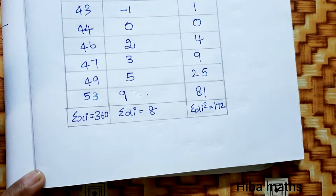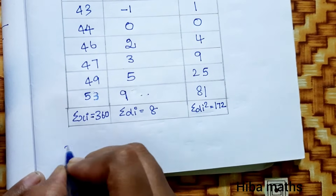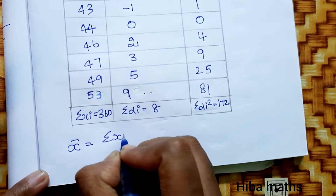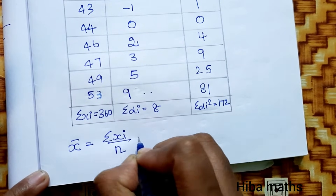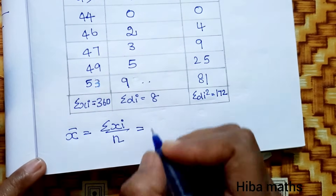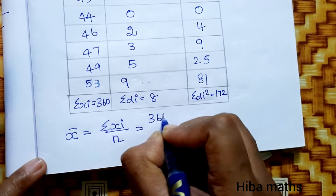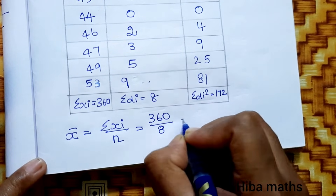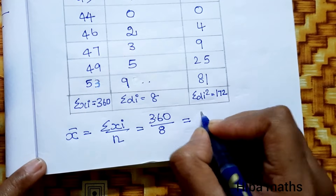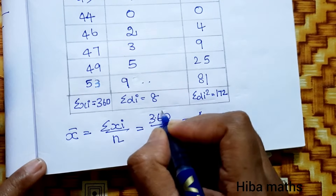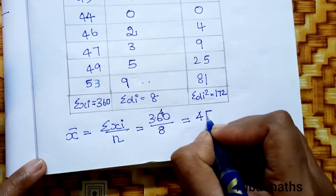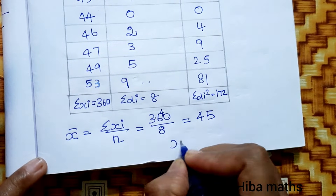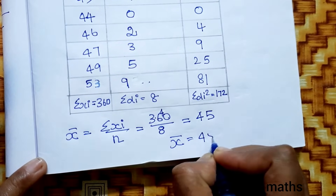We will start with the mean. The formula is x̄ = Σxi / n. So, Σxi = 360 divided by n = 8. Computing: 8 × 4 = 32, balance 4; 8 × 5 = 40. So the mean value is 45.